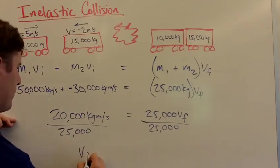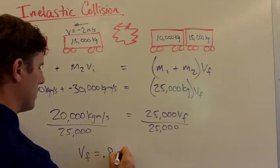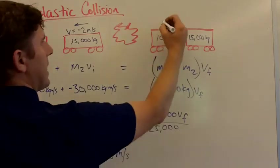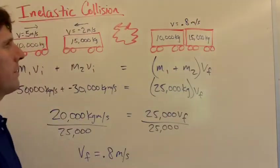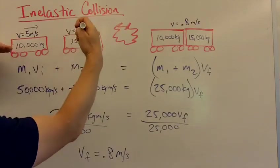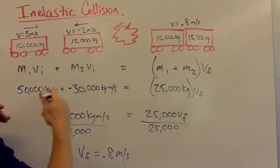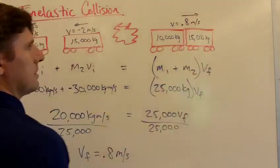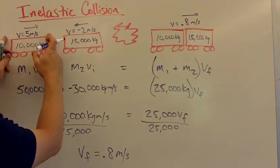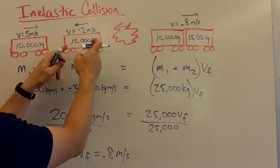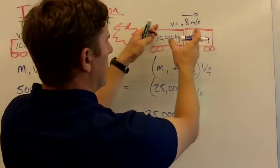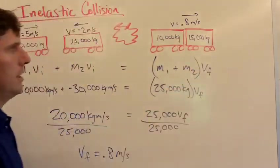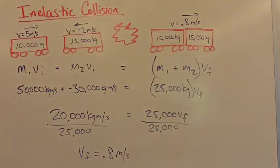That's how fast these two cars will be going after they link together. When one was going one way and one was going the other way, notice that they're going in this direction because the velocity is positive. This one had a little more momentum coming into the collision than this one, even though this one had a bigger mass. The result is that both cars link together and travel more slowly in this direction at a rate of about 0.8 meters per second.